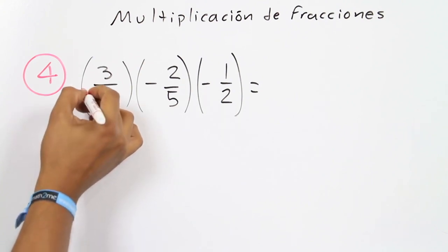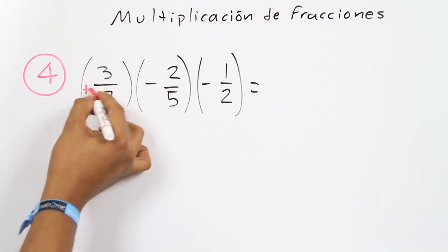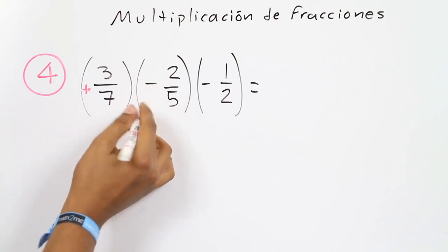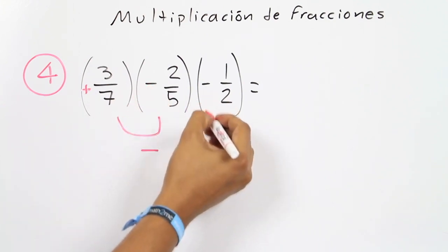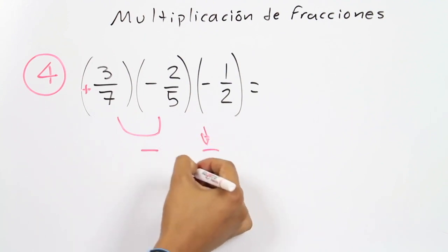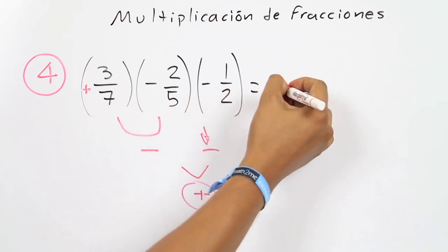So if the first fraction doesn't have a sign, it means that it's a plus. Plus times minus equals minus, so the first pair is equal to a minus. Minus times minus is equal to a plus, so we get the sign of the answer, that is a plus.